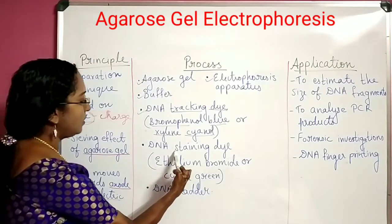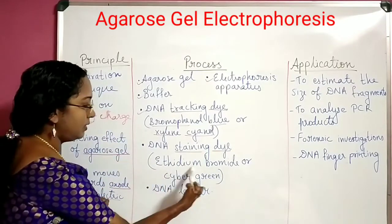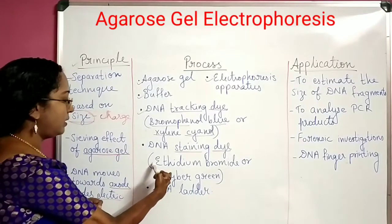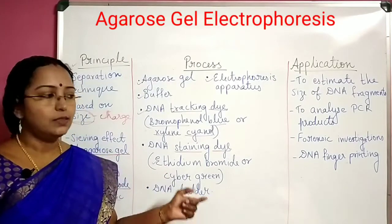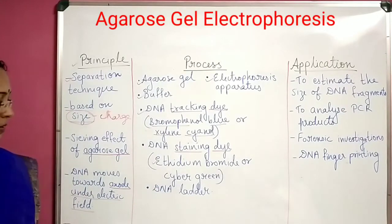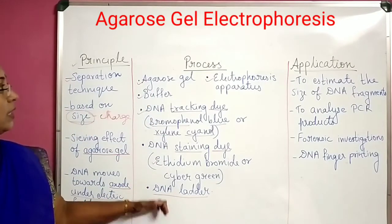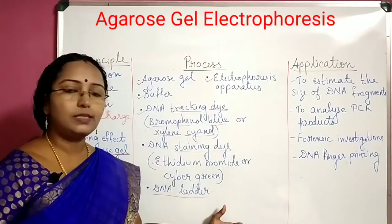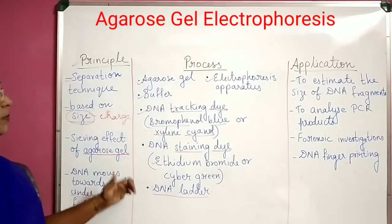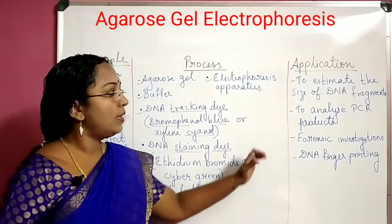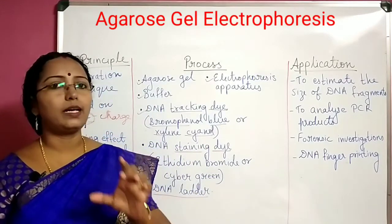One more dye you use is the DNA staining dye. The DNA staining dye is either ethidium bromide or SYBR green. Usually ethidium bromide is most commonly used, but it is highly carcinogenic, so nowadays it is substituted by SYBR green. And after that, one more thing we need is a DNA ladder. I will give you an explanation of all these ingredients and how they are used in gel electrophoresis in the next video. In this video I'm just telling you the principle, the ingredients required, and then I'll take you to the applications. Once you understand the base, the next video I'll tell you how exactly the process is happening.